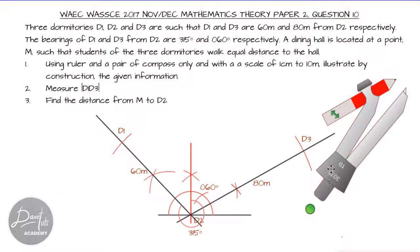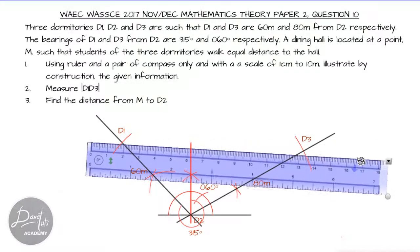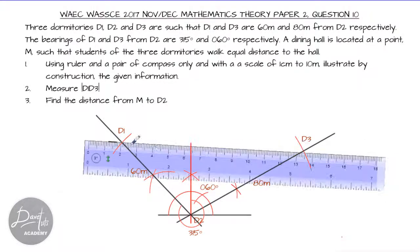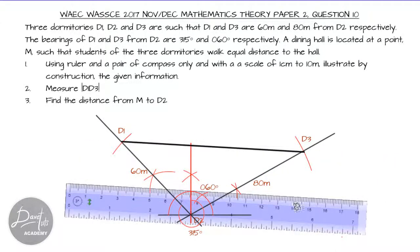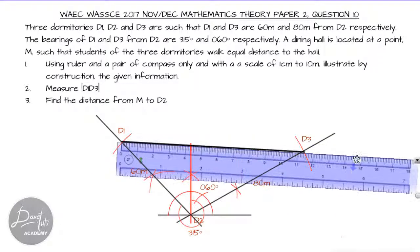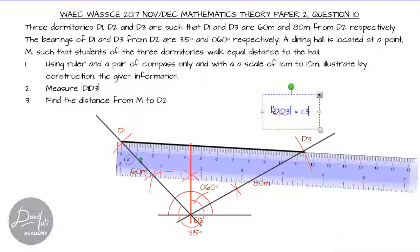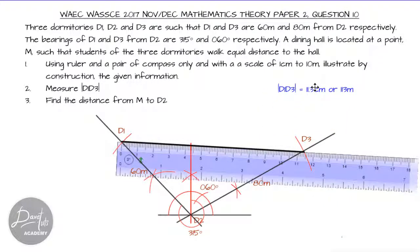We join dormitories D1 and D3 to complete our triangle. Now for question number 2, we measure D1D3 from the ruler — the line D1D3 measures 10.3 centimeters. Converting back to meters using our scale, that gives us 103 meters. So D1D3 equals 103 meters.